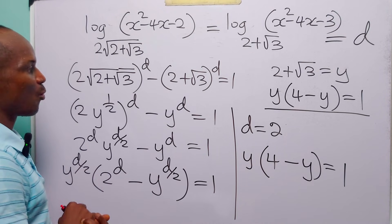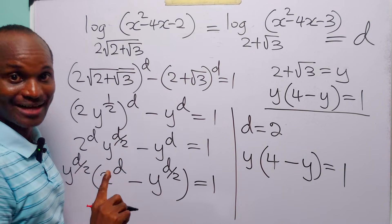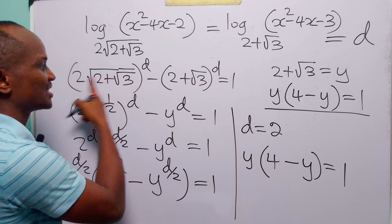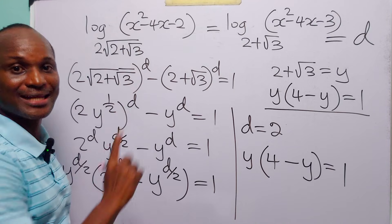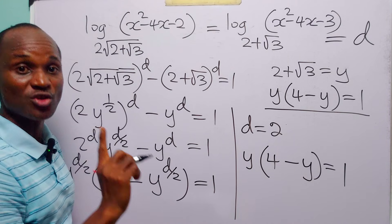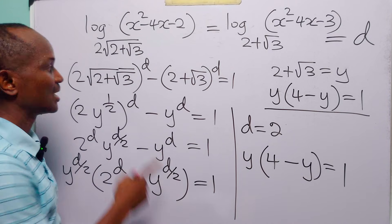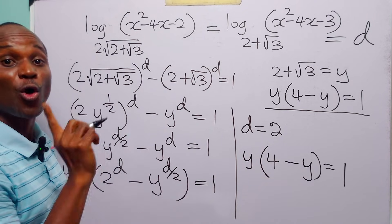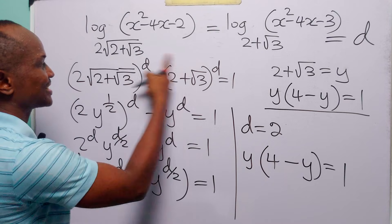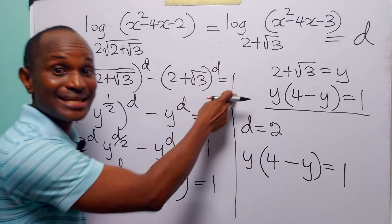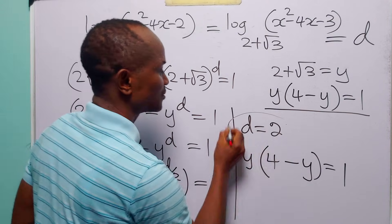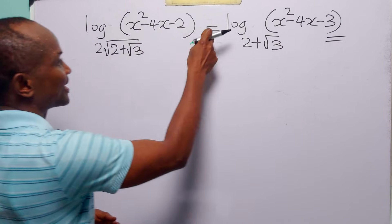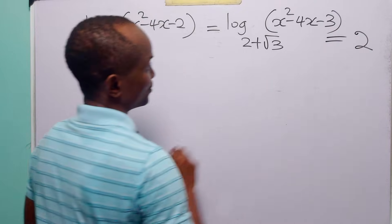Notice that when d is greater than 2 the left-hand side continues increasing, and for values of d less than 2 the left-hand side continues decreasing. So the only time when the left-hand side is equal to 1 is when d equals 2. So finally we have that the constant d is equal to 2.